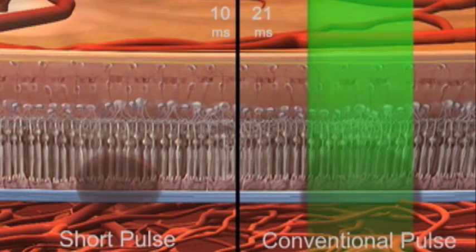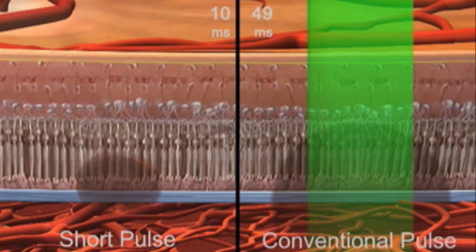With longer pulse durations, more thermal energy spreads in all directions, heating larger volumes of tissue.